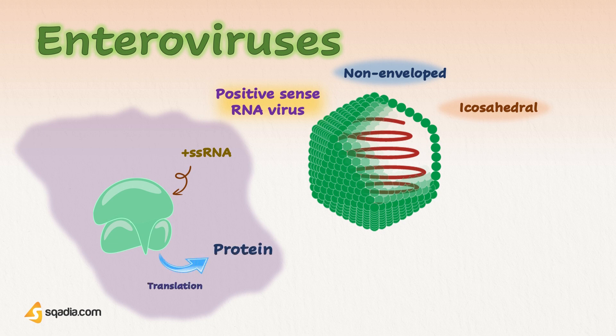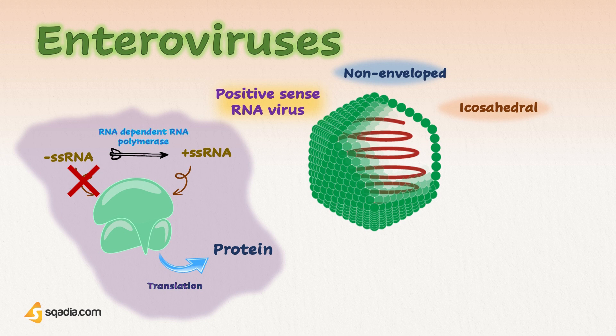While negative-sense RNA is the one that came out of the virus and is unreadable by the host ribosomes. So by the aid of the enzyme RNA-dependent RNA polymerase, it has to be converted into positive-sense RNA so that it becomes readable by ribosomes and can be translated into desired proteins.